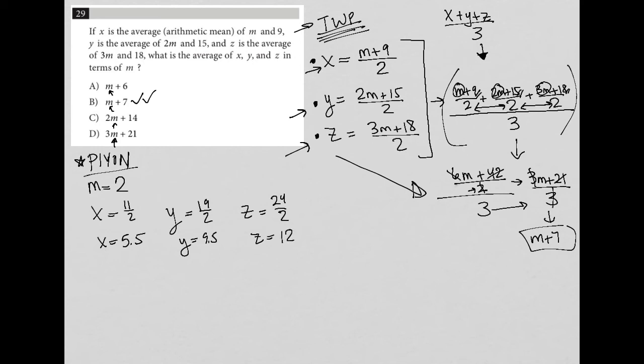So all that's left is to actually answer the question. So the question says, find the average of x, y, and z. So I'm going to do that by adding them all up. So 5.5 plus 9.5 plus 12. I'm going to divide all of that by 3. I throw this into my calculator. 5.5 plus 9.5 is 15, plus 12 is 27. So I end up with 27 divided by 3, which is 9. So there's my average.